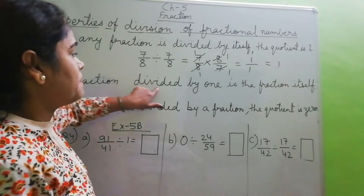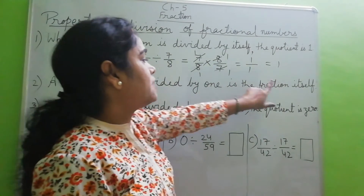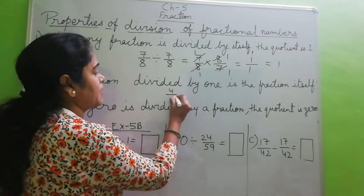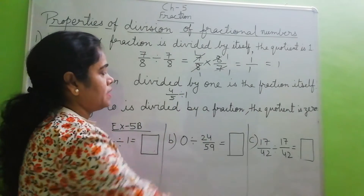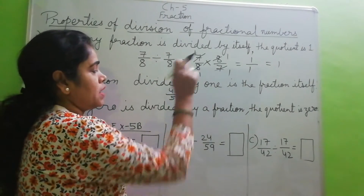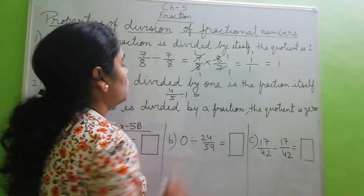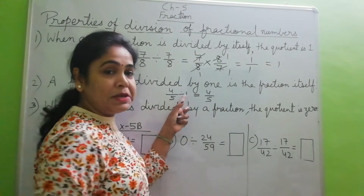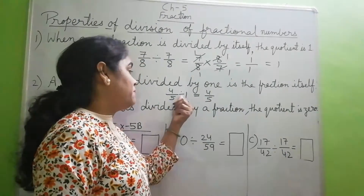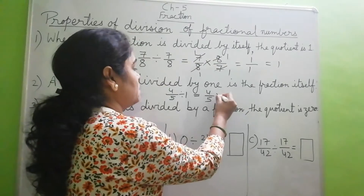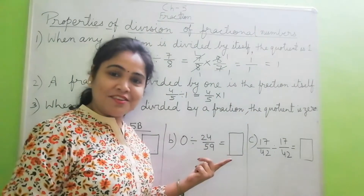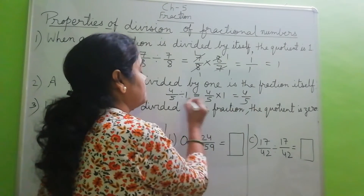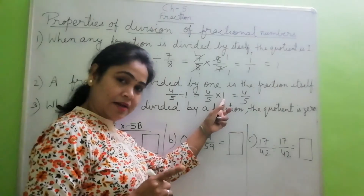Next: a fraction divided by 1 is the fraction itself. Suppose I am taking a fraction 4 by 5, and I am dividing this by 1. Same procedure — we write 4 by 5 as it is, change the division sign to multiplication, and write the multiplicative inverse of 1. Since the multiplicative inverse of 1 is 1, we get 4 by 5 multiplied by 1, which is 4 by 5.